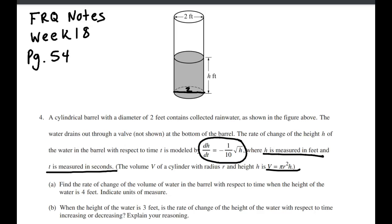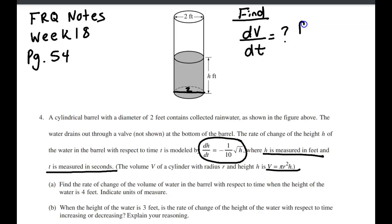So for part A, they're saying find the rate of change of the volume of the water. My goal is to find the rate of change of the volume. Volume is going to be measured in cubic feet, since I'm not using any other units here. And that's going to be in seconds for the time. They're also telling us that H equals 4.